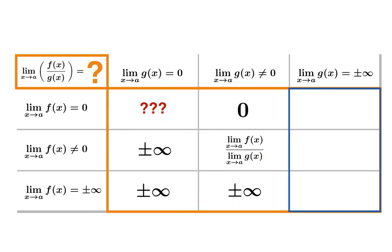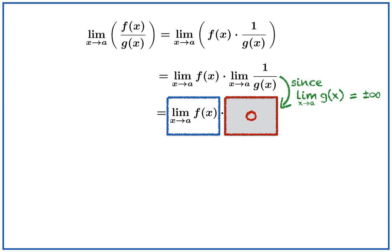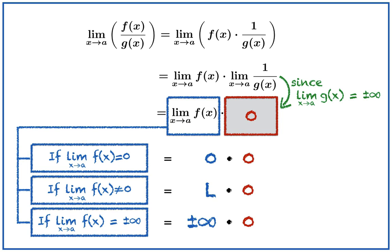Let's move on to the final column. We're assuming in this case that the limiting value of the denominator function is either positive or negative infinity. As before, we express the limit of the quotient as a product of two limits. Since the limit of the denominator function g is positive or negative infinity, the limit of the reciprocal is zero. Depending on the limiting behavior of the numerator, we get three options. The first two are clearly zero, and the third option gives us another indeterminate form.